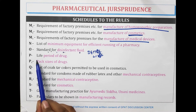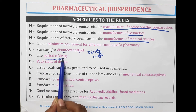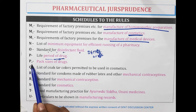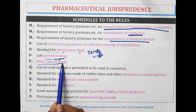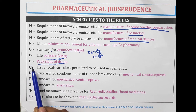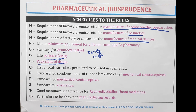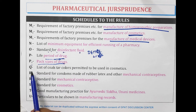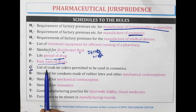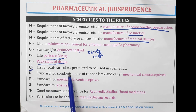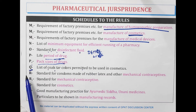Schedule P is for the life period of a drug. Schedule P1 is for the pack size of a drug. Schedule Q — Q for quercetin, and quercetin is a coloring agent. Therefore, Schedule Q contains the list of coal tar colors permitted to be used in cosmetics.